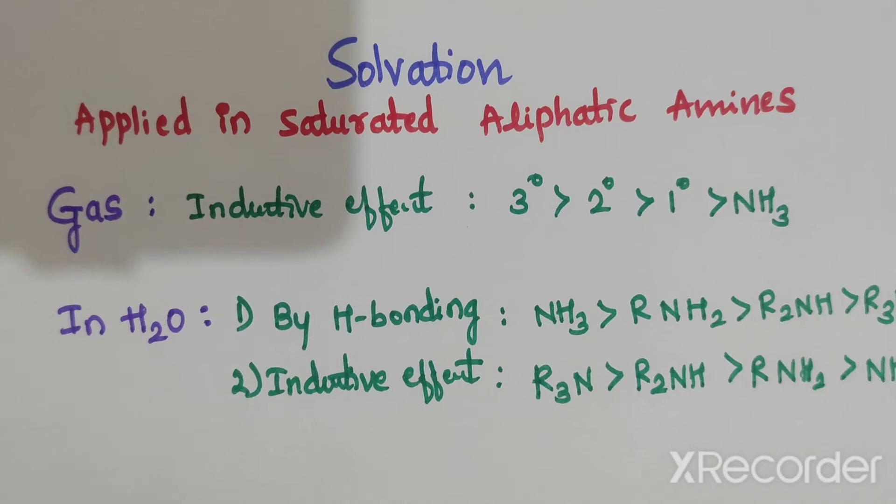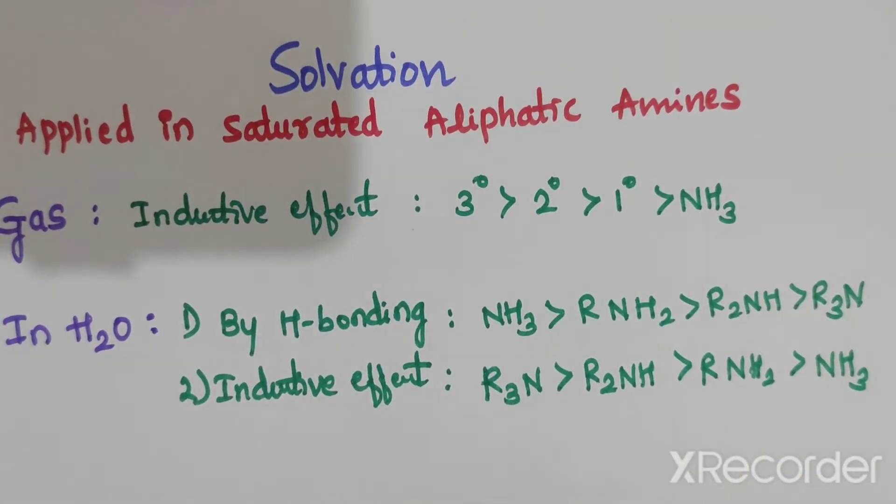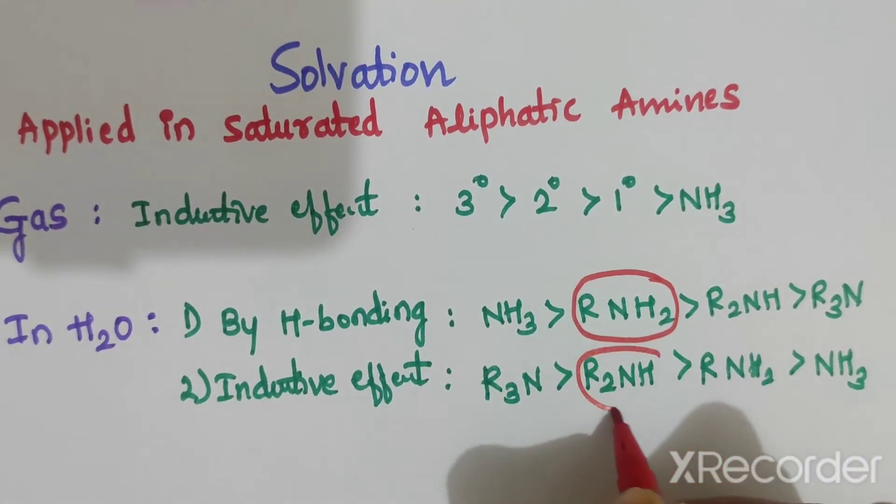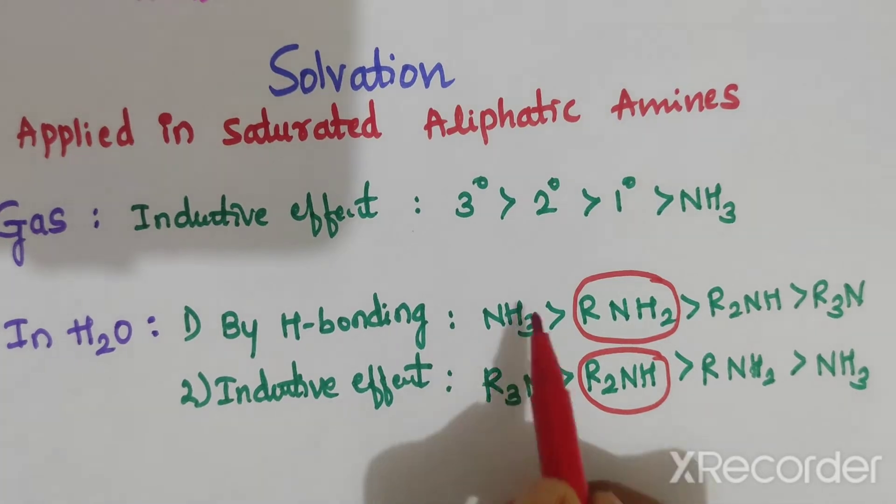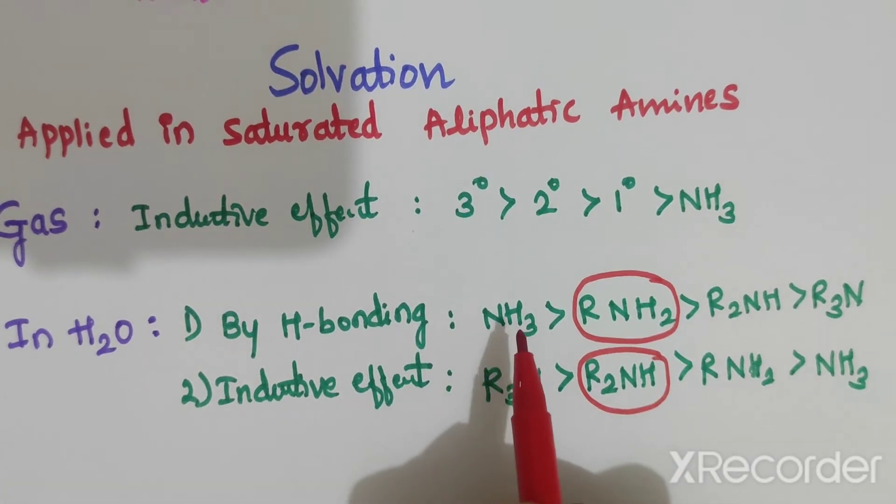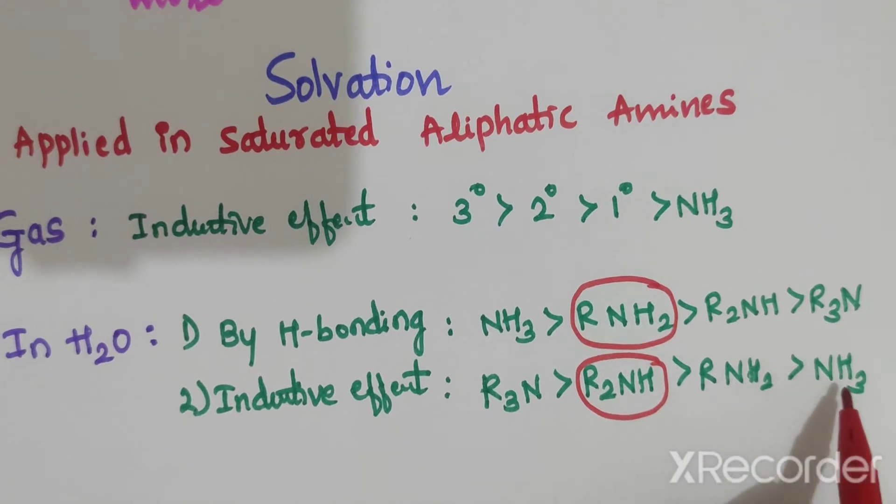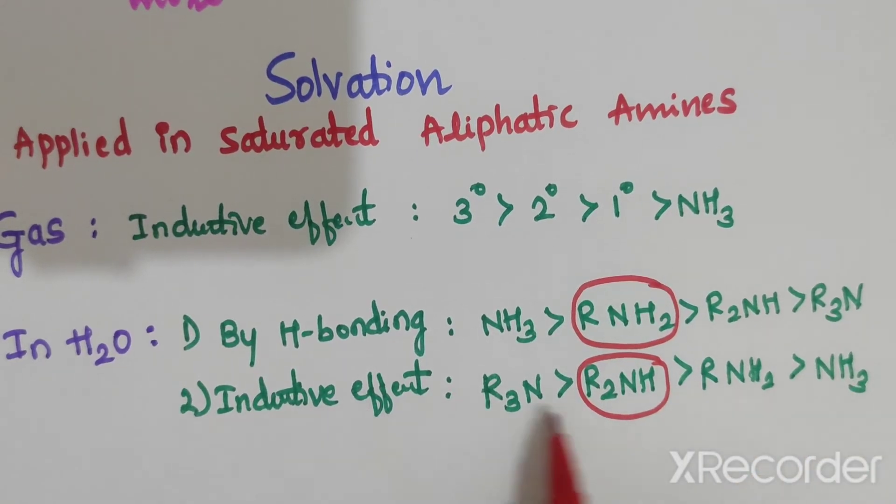In both cases, the secondary amine has similar basicity. Ammonia is more basic in the hydrogen bonding case and less basic in the inductive effect case.